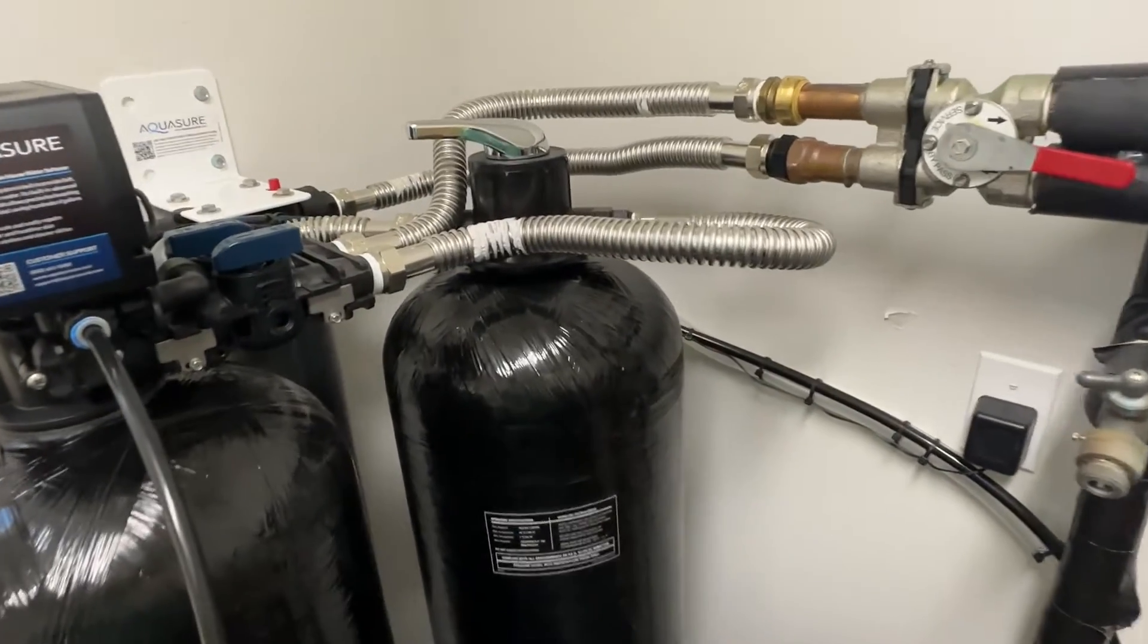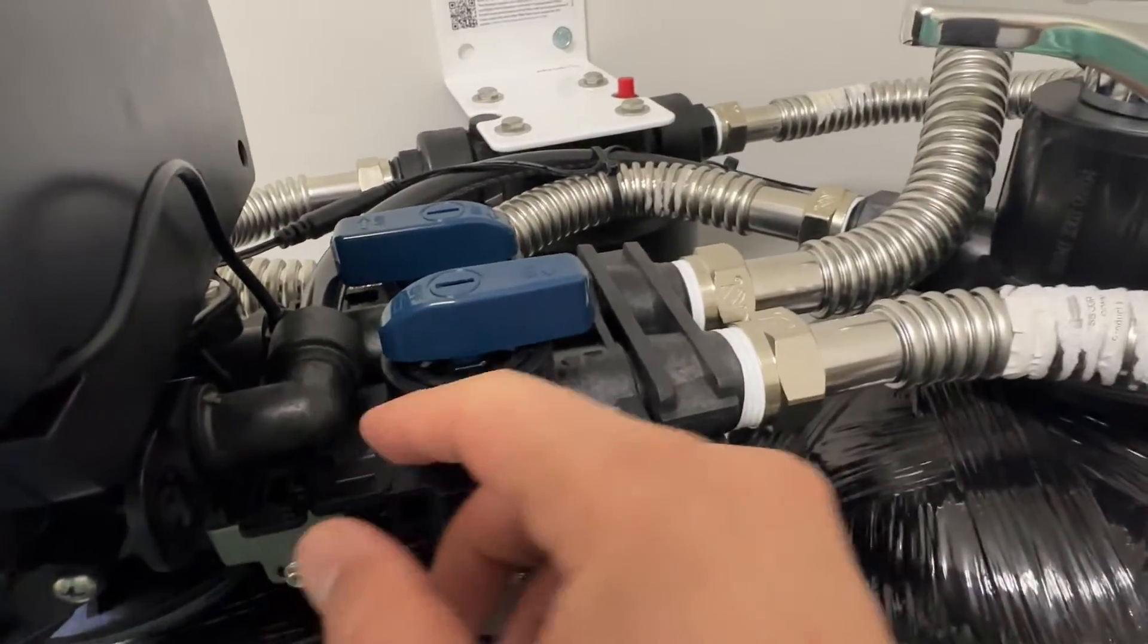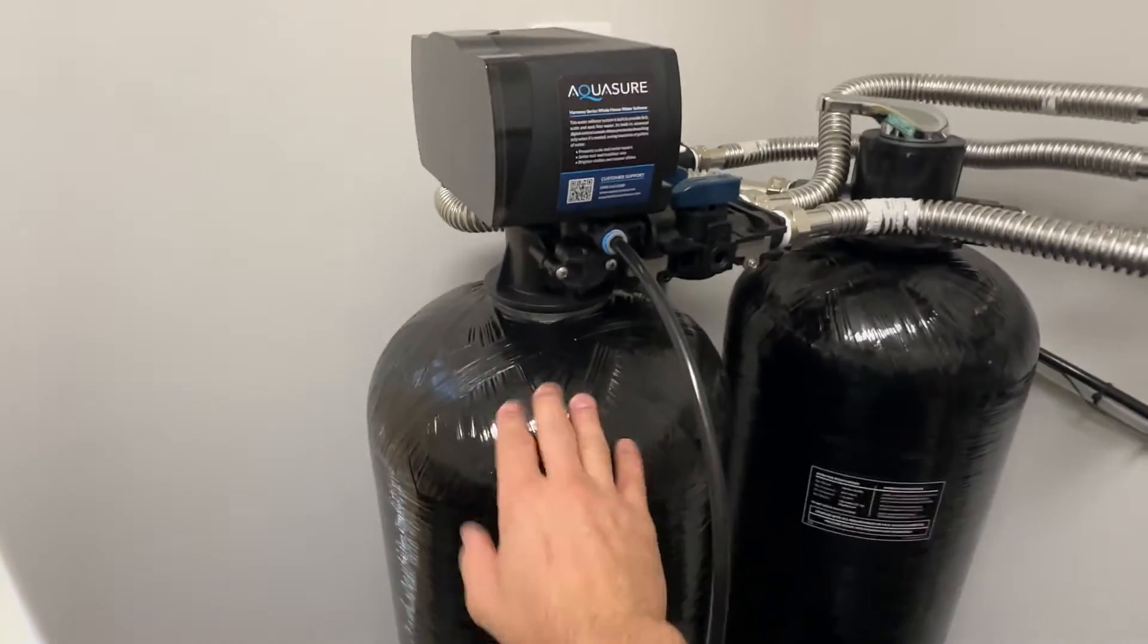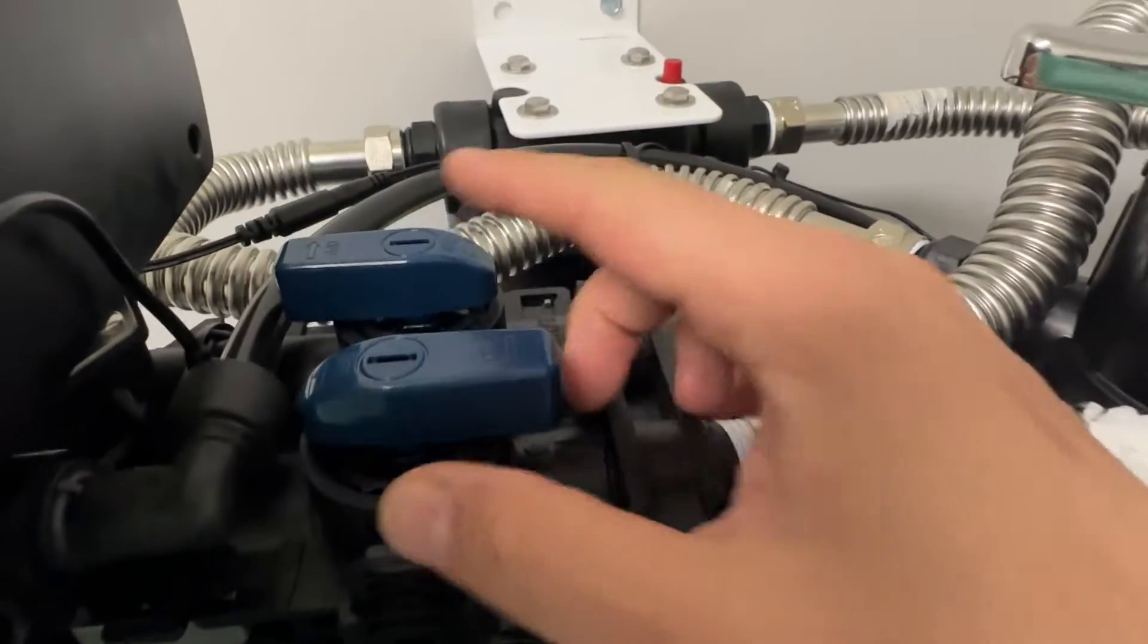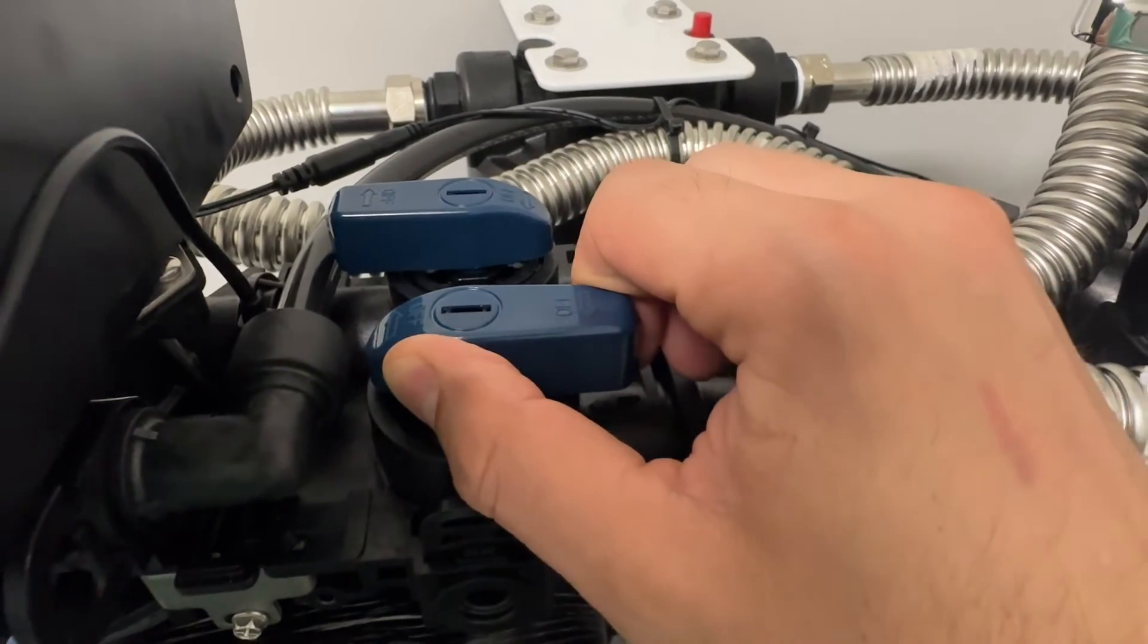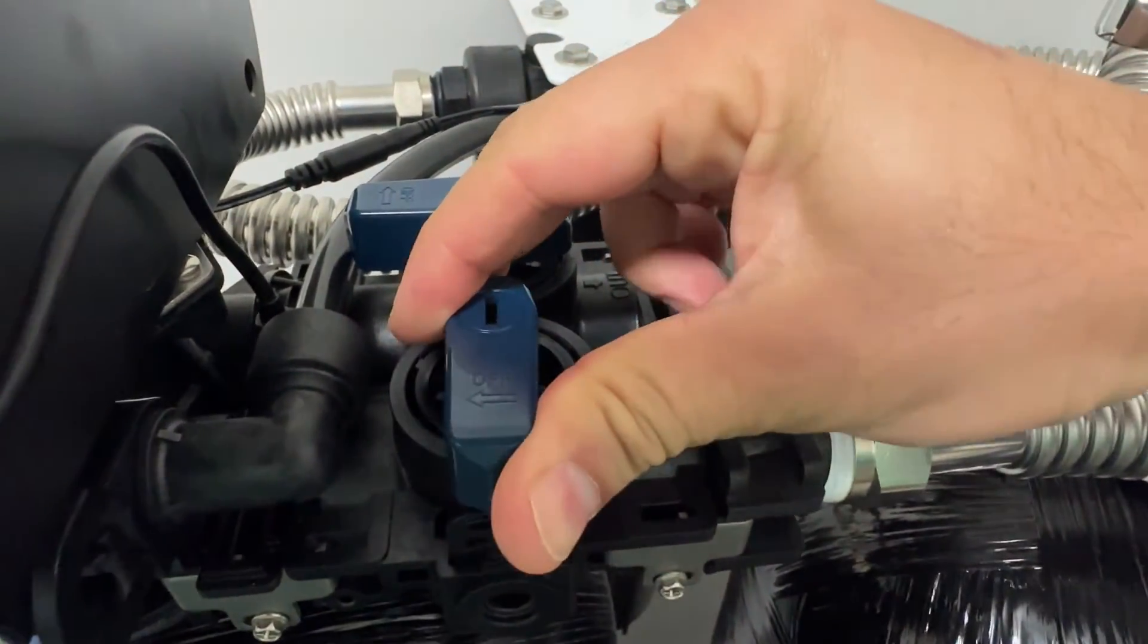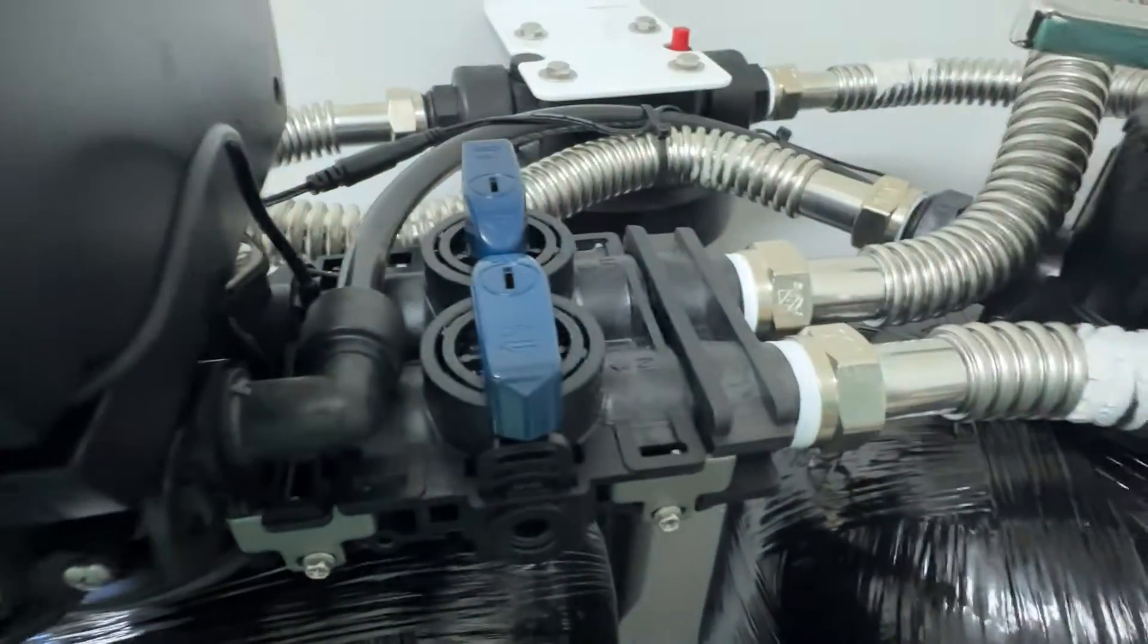First thing you want to do is set your bypass valve so that you're not pushing any of the dirt into your water softener. So this is the carbon filter, this is the water softener and the control unit and valve for the water softener and these are two valves for your bypass. So I'm going to set this one to bypass and I'm going to set this one to bypass as well.